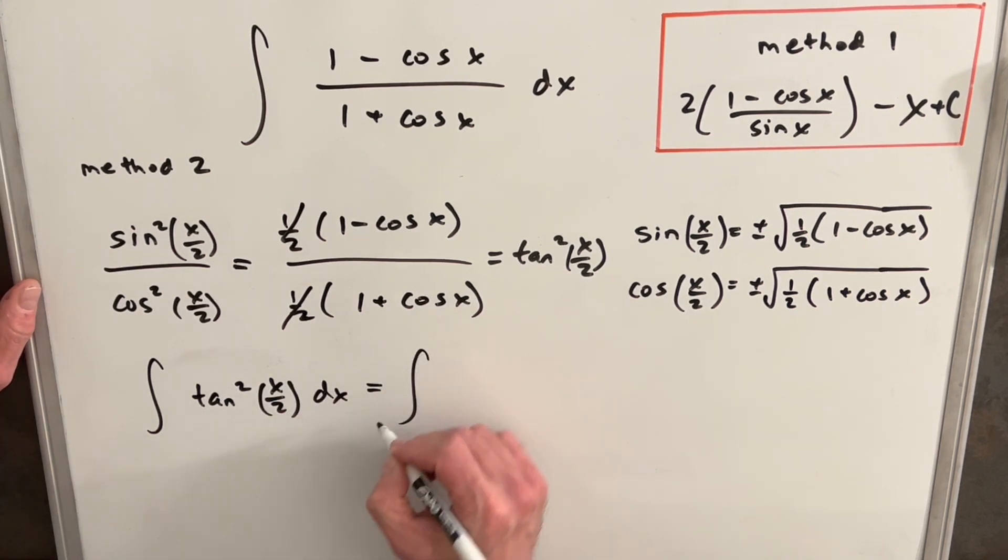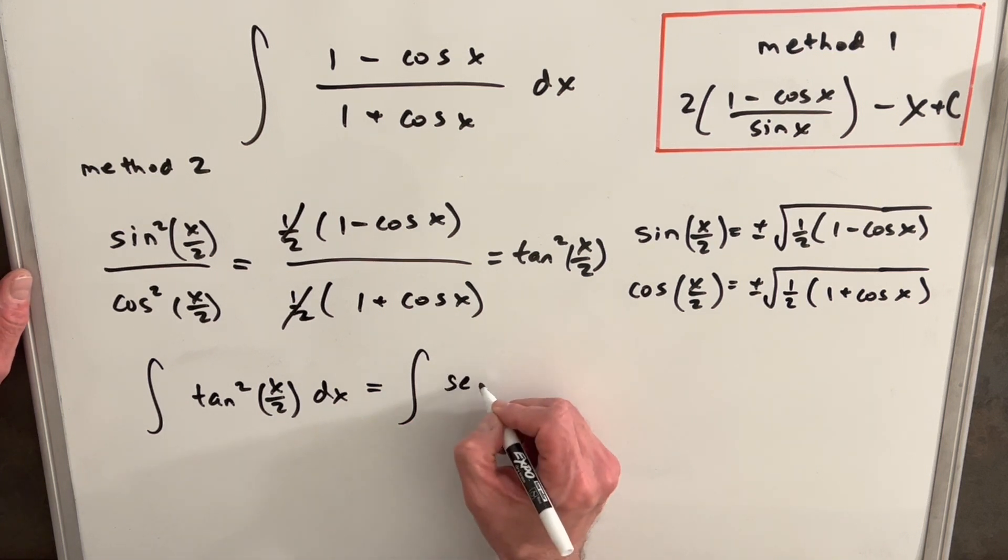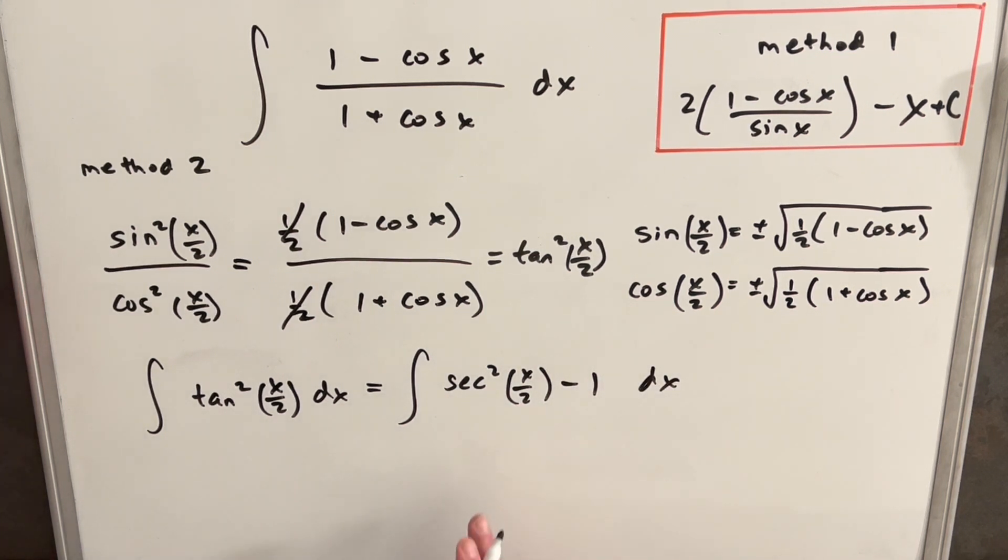And then we just have this identity that tan² is the same thing as sec² minus 1. So we'll rewrite this as sec² (x/2) minus 1 dx. Now, the integral of sec² is just tan (x/2), but we have to bring out a ½ in the denominator, flipping it. We're going to have a 2 out front minus the integral of 1 is just going to be x plus c.